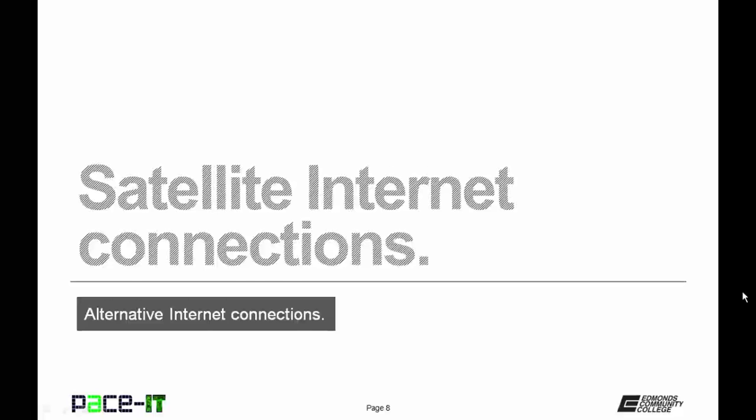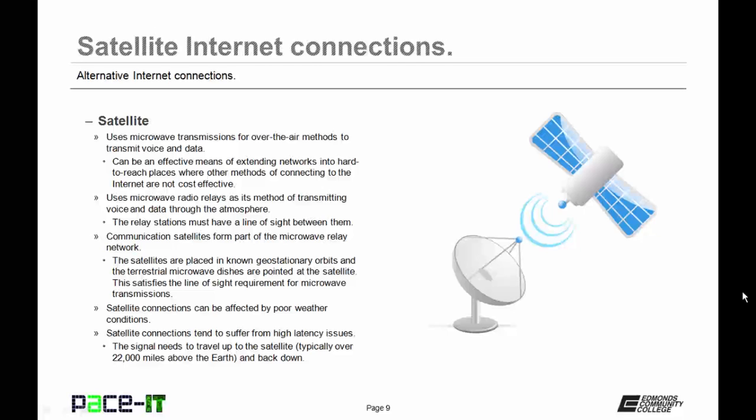Now let's move on to satellite internet connections. Satellite internet connections use microwave transmissions as an over-the-air method to transmit voice and data. This can be an effective means of extending network coverage into hard-to-reach places where other methods of connecting to the internet are not cost-effective. It uses microwave radio relays to transmit voice and data through the atmosphere, and just like WiMAX, the relay stations must have a line of sight between them. Satellite internet connections use communications satellites placed in geostationary orbits — meaning they orbit over the same place all the time — and terrestrial microwave dishes are pointed at the satellites, satisfying the line-of-sight requirements.